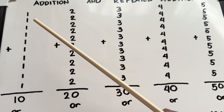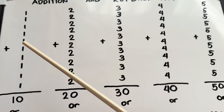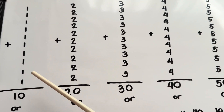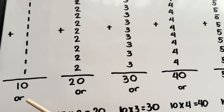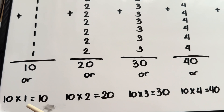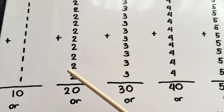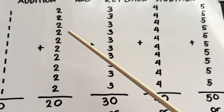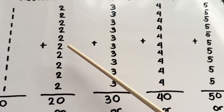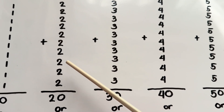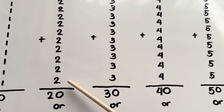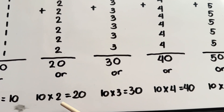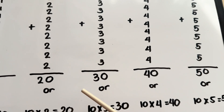1 plus 1 plus 1 plus 1 plus 1 plus 1 plus 1 plus 1 plus 1 plus 1 is equals to 10. Next example, 2 plus 2 plus 2 plus 2 plus 2 plus 2 plus 2 plus 2 plus 2 plus 2 is equals to 20. Or, 10 times 2 is equals to 20.